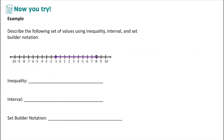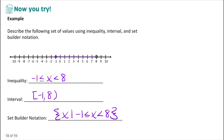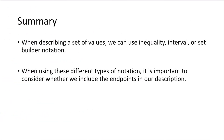Pause the video and try describing the next set of values on your own. This set goes from negative 1 to 8, where negative 1 is included and 8 is not. As an inequality: negative 1 is less than or equal to x, less than 8. In interval notation, we put a square bracket at negative 1 and an open parenthesis at 8. In set builder notation, we say all x such that x is between negative 1 and 8. Remember, when describing a set of values, it's very important to think about whether you're including the endpoints or not.